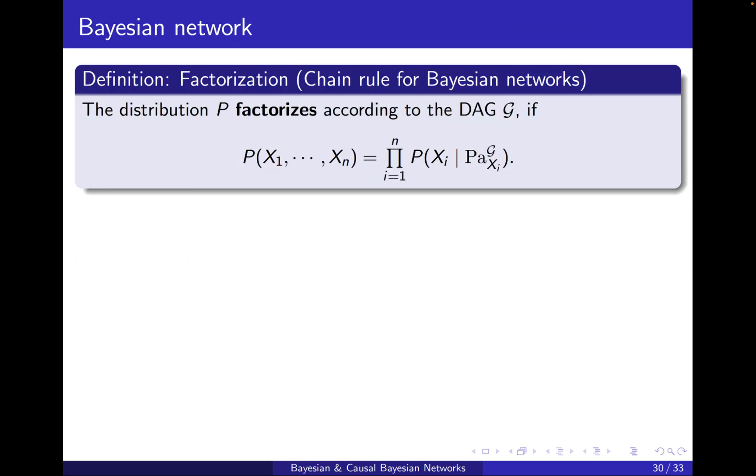Let's formalize stuff. We start with the definition. We say that the distribution P over the variables x1 to xn factorizes according to a directed acyclic graph G, if the joint distribution of the variables equals to the multiplication of the conditional probabilities